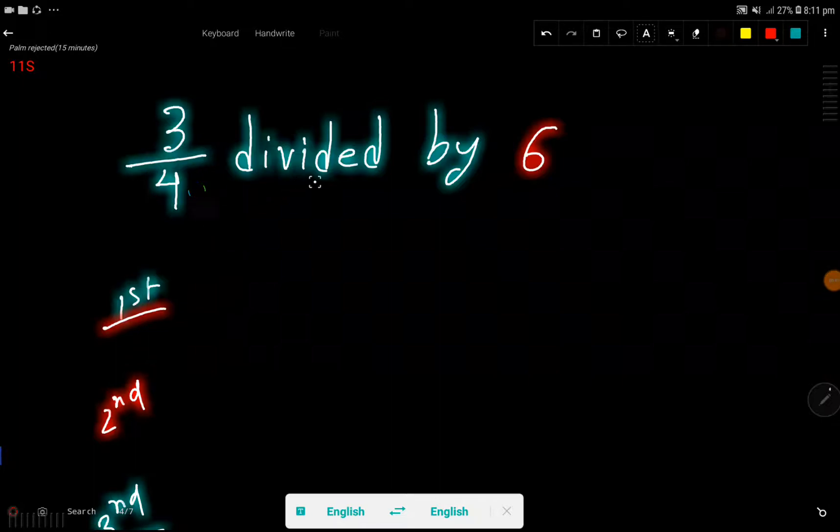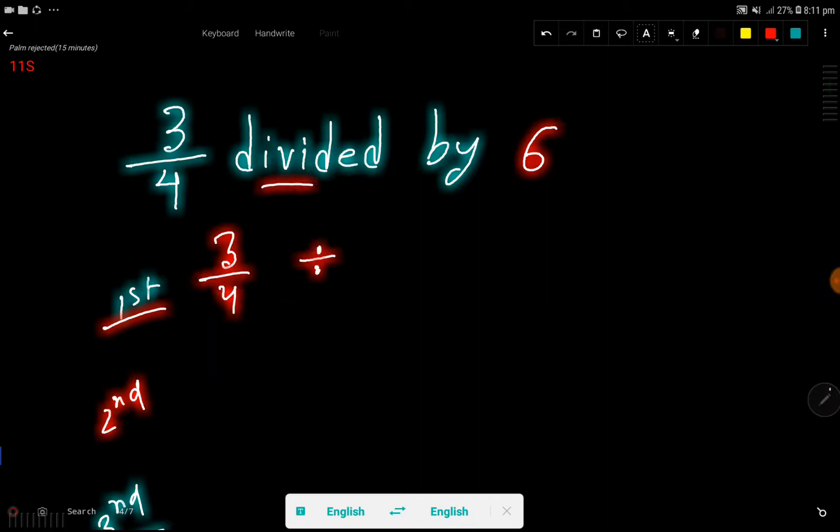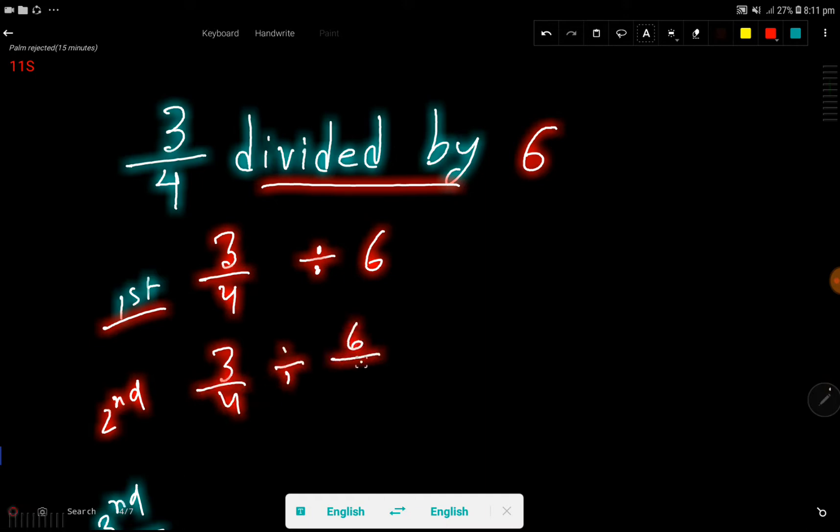3 over 4 divided by 6. So I can translate this thing like this: divided by means this division sign, then 6. Okay, then I'll rewrite this: 3 over 4, division sign, then 6 over 1. We can rewrite 6 as 6 over 1.